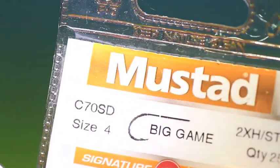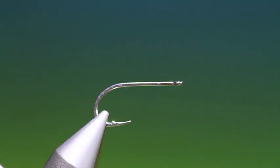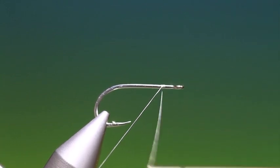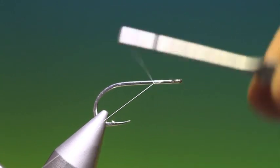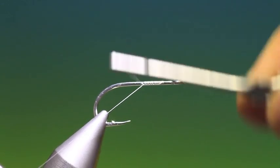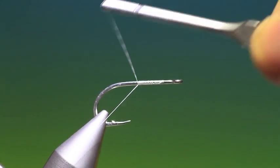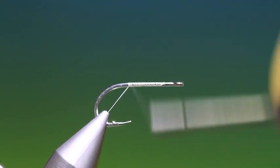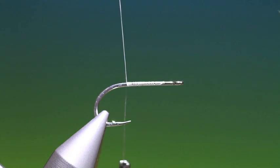We'll start with a Mustard C70 size 4 saltwater hook. This is one of my sea trout patterns that is kind of a fusion inspired by all the Danish patterns that use grizzly hackle. This has been a very good pattern for me over the last few years.